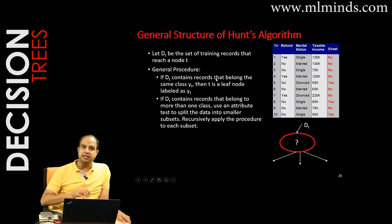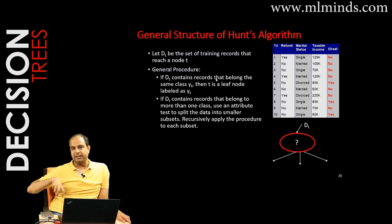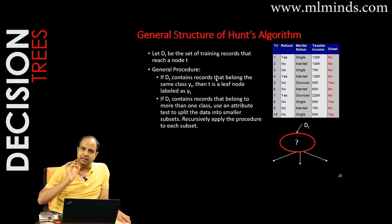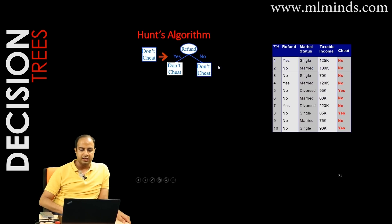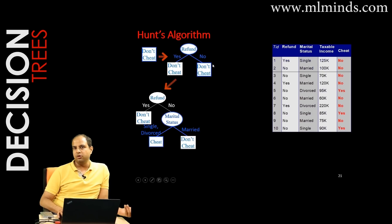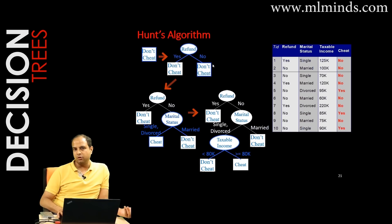Hunt's algorithm is a recursive algorithm. It starts at the root node — all decision trees have at least a root — and whether to split further depends on whether children are pure or impure. Impure children get split more and more until the full tree is grown.